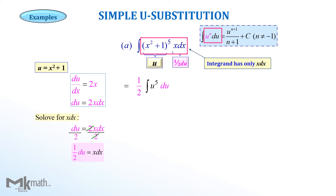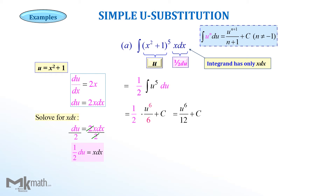Since we have the left side of the formula with n equal to 5, we apply the formula to get one-half times u to the sixth power over 6 plus arbitrary constant c. Simplifying gives u to the sixth over 12 plus c. Finally, we bring back the original function to get the solution.